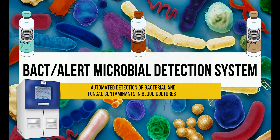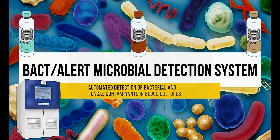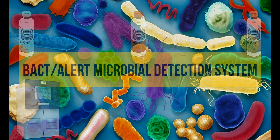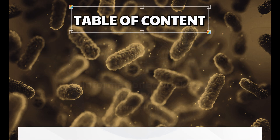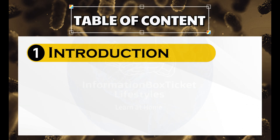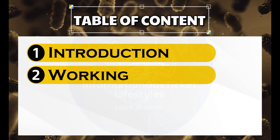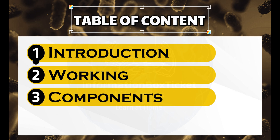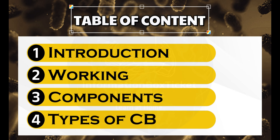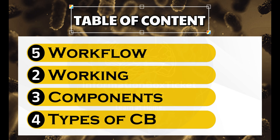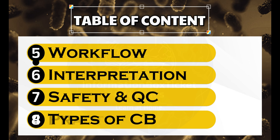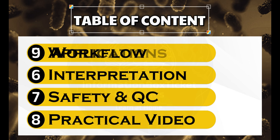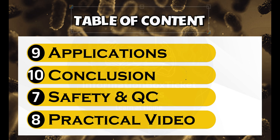BactiAlert Microbial Detection System: Automated Detection of Bacterial and Fungal Contaminants in Blood Cultures. Table of Contents: Introduction to BactiAlert, How BactiAlert Works, BactiAlert Components, Types of Culture Bottles, Workflow of BactiAlert, Result Interpretation, Safety and Quality Control, Practical Video Procedure, Applications of BactiAlert, Conclusion.